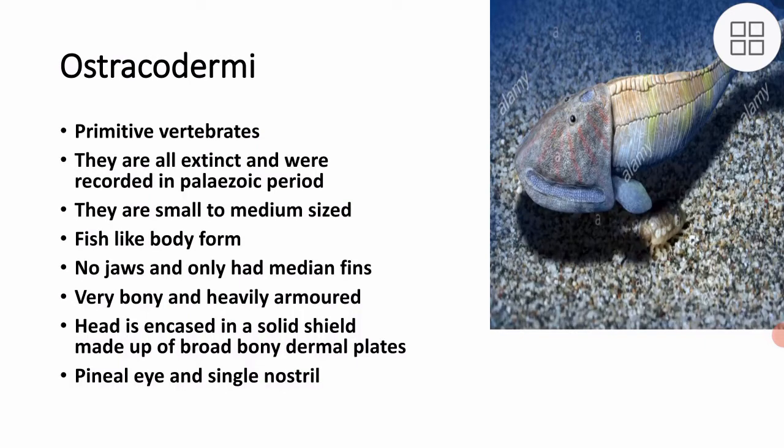Ostrachodermi are the primitive vertebrates. They are all extinct and were recorded in the Paleozoic period; they are not found now. They are small to medium size with a fish-like body form. They had no jaws and only had median fins.